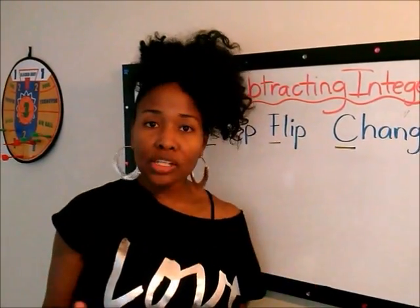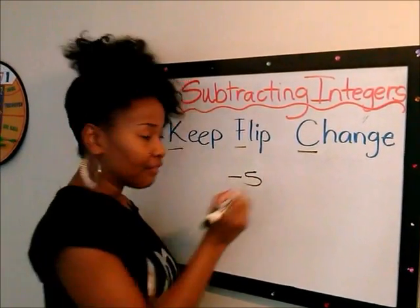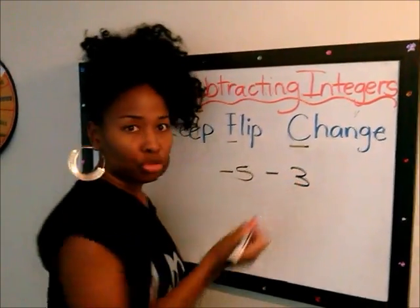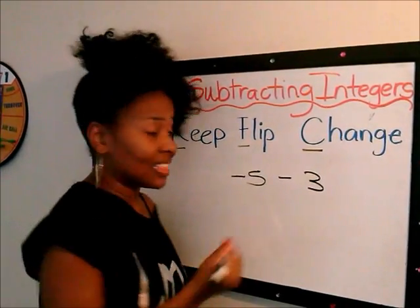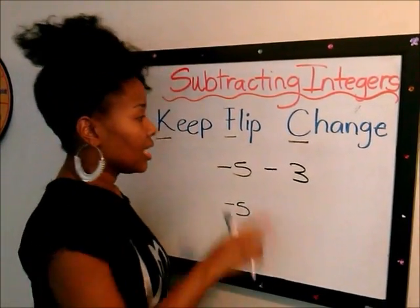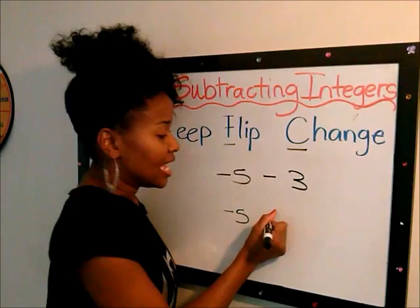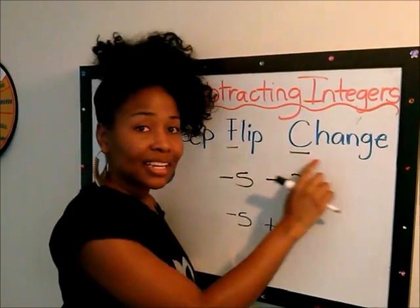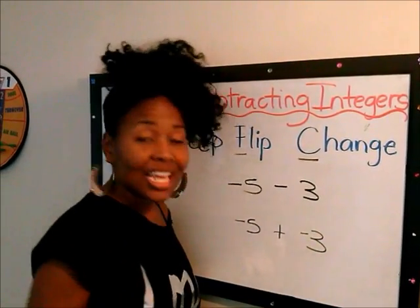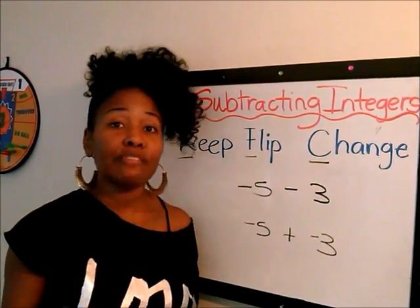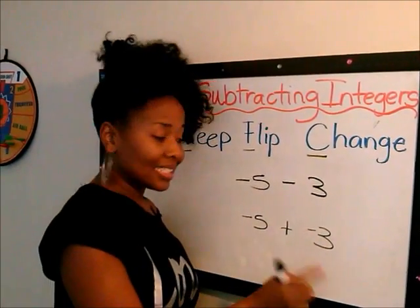This is what's going to help you know what to do when you are subtracting integers. So let's say I have negative five take away three. The K stands for Keep — this first integer, I'm going to keep it the same: negative five. The F stands for Flip — this subtraction sign, I'm going to flip it from subtraction into addition. And then the C stands for Change — this is a positive three, so I'm going to change it into a negative three. So now I have changed my subtraction problem into an addition problem: negative five plus negative three.